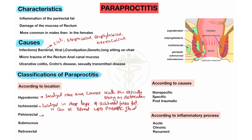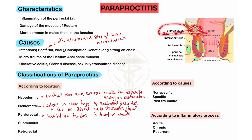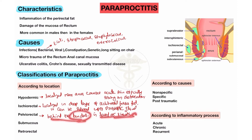Pelviorectal Paraproctitis mostly occurs in the region of the pelvis, localized behind the pelvic fundus and in the levator sheath — mostly supra-levator region. Here you will see the pelviorectal type present in the supra-levator sheath region, behind the fundus and on the levator sheath.